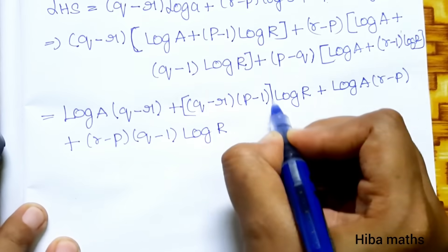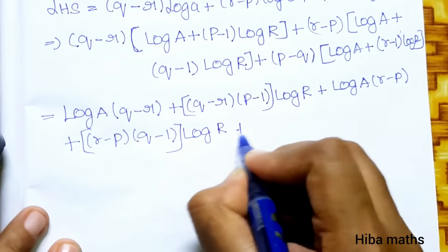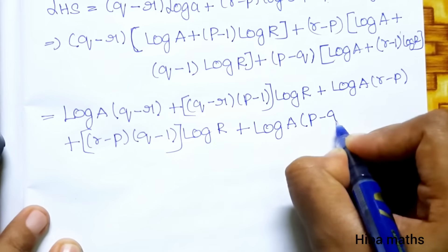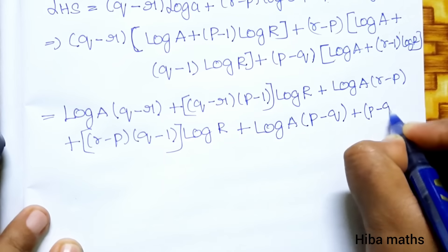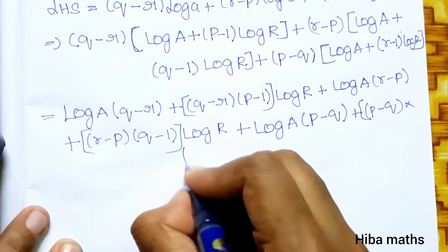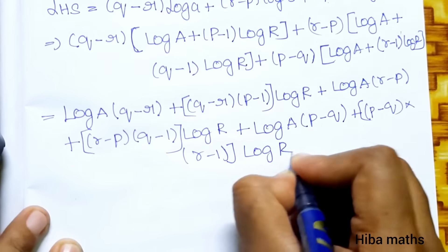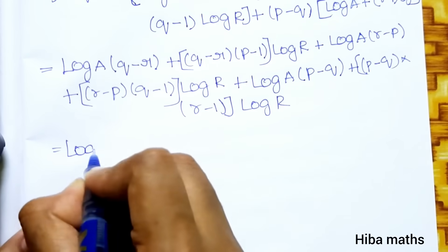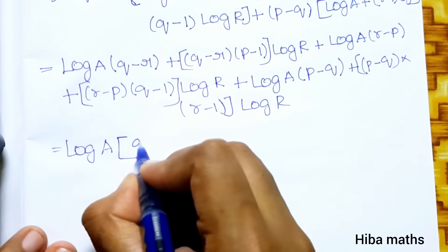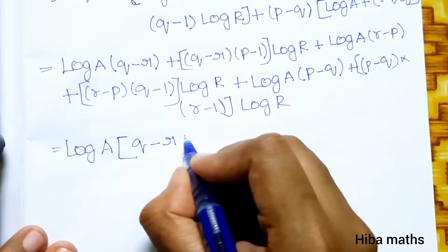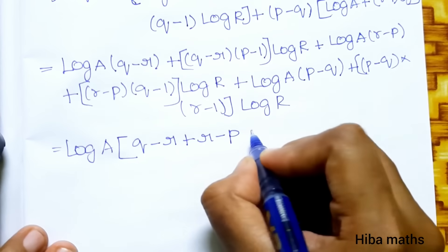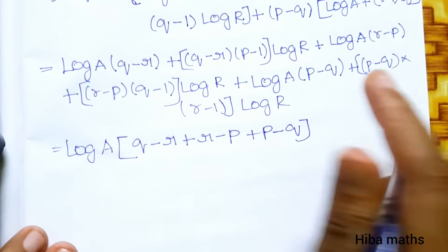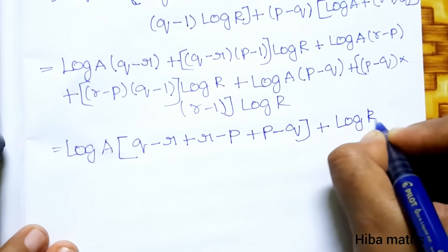Plus (P minus Q) into [log A plus (R minus 1) log R]. Now log A is common — taking log A out: log A into [(Q minus R) plus (R minus P) plus (P minus Q)]. And log R is common for the other bracket.